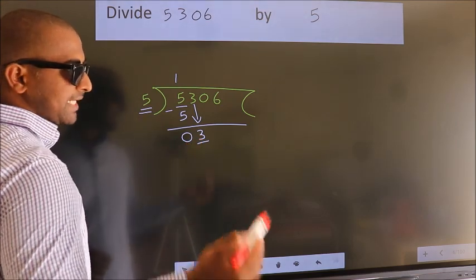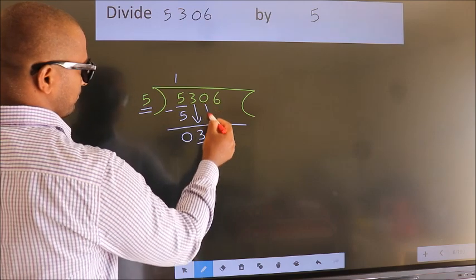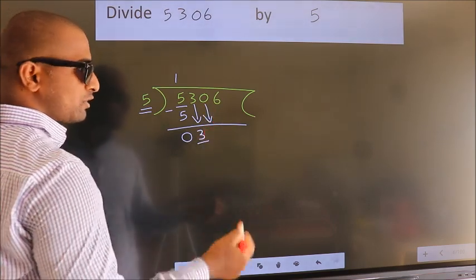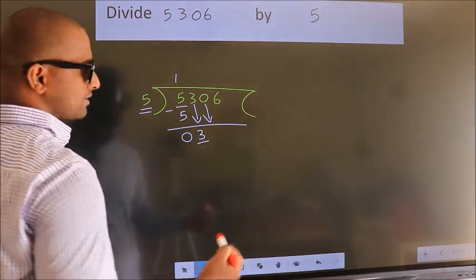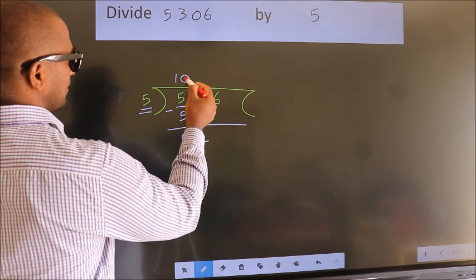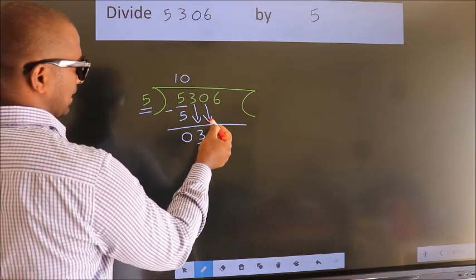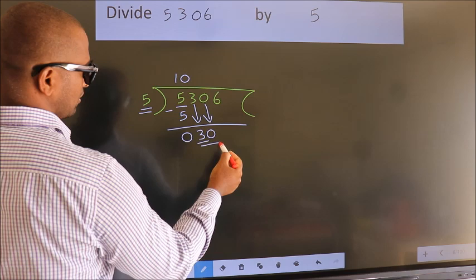So we should bring down the second number. And the rule to bring down second number is put 0 here. Then only we can bring down this number. So 30.